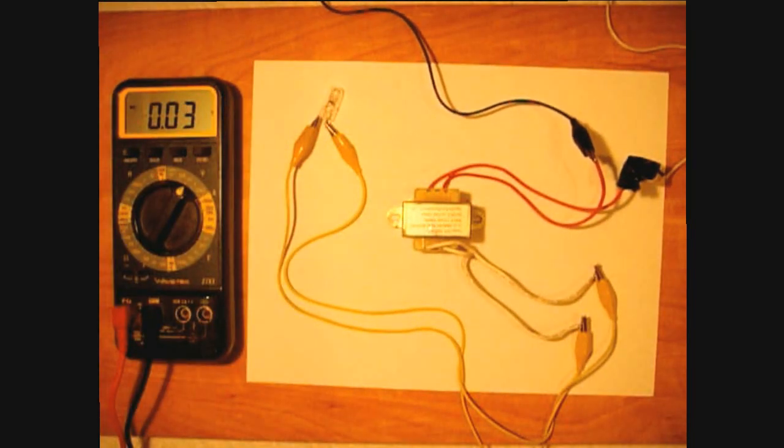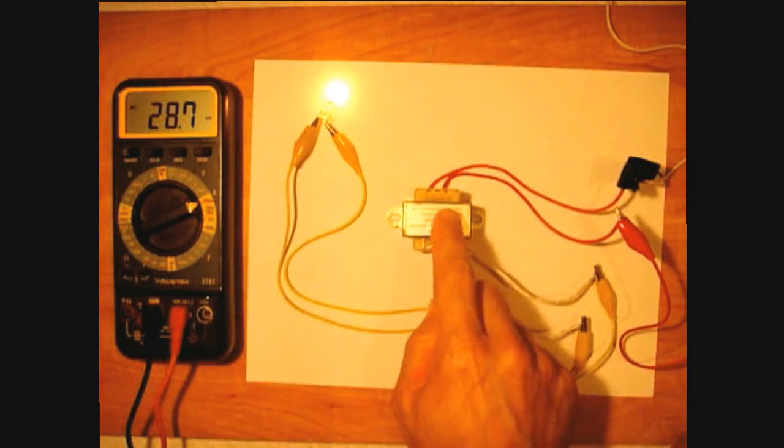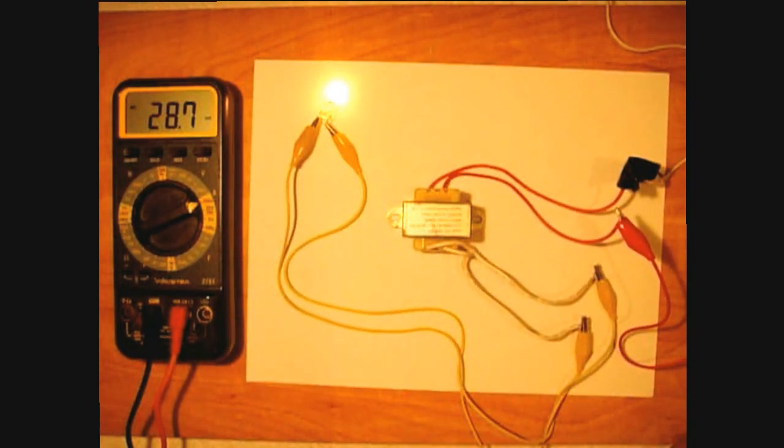Alright. So we're drawing around 28, 29 milliamps. So with this load, it's 11.2 volts. It's around a quarter of an amp, that bulb, that it draws. I'm drawing 30 milliamps or close to it on the AC input.